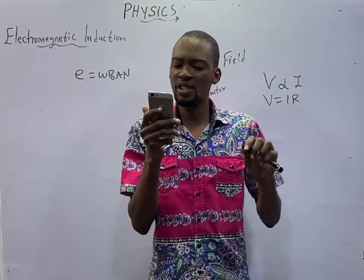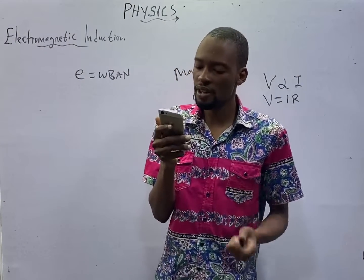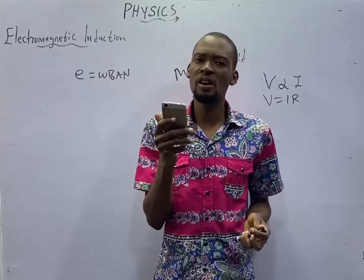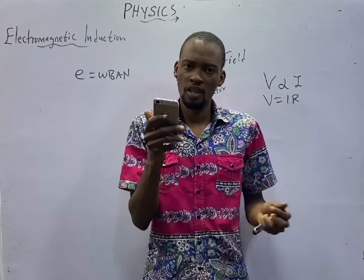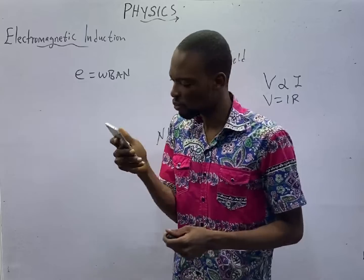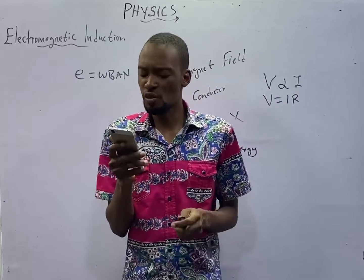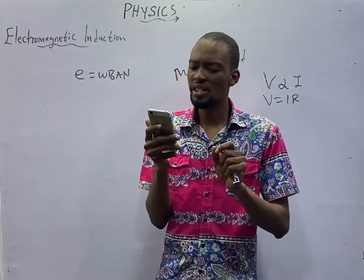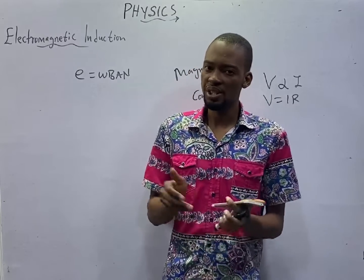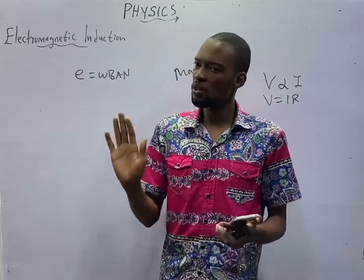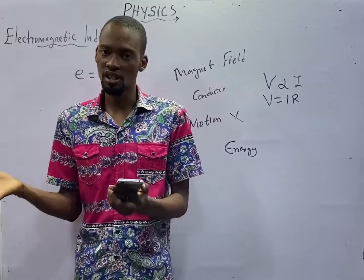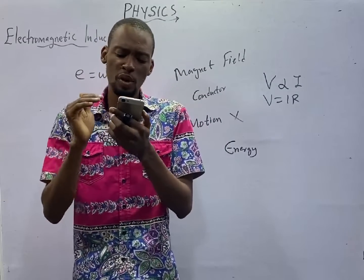Which of the following is not directly associated with direct current? A: dry cell. B: a moving coil galvanometer. C: a transformer. And D: a lead acid accumulator. Anywhere you see transformer, know that it is not associated with DC at all. In fact, transformer is only associated with AC, while the equivalent part of it in DC is the induction coil. The induction coil steps up DC, while the transformer steps up AC.